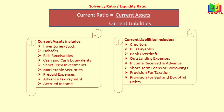Current liabilities include creditors, bills payables, bank overdraft, outstanding expenses, income received in advance, short-term loans or borrowings, provision for taxation, and provision for bad and doubtful debts. These are the normally used current liabilities.